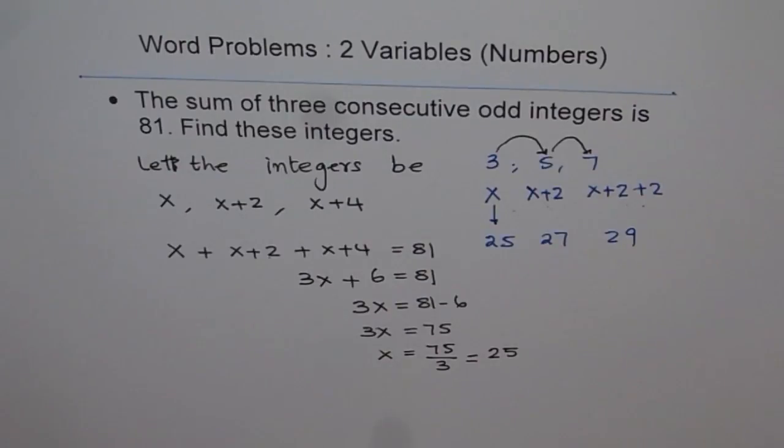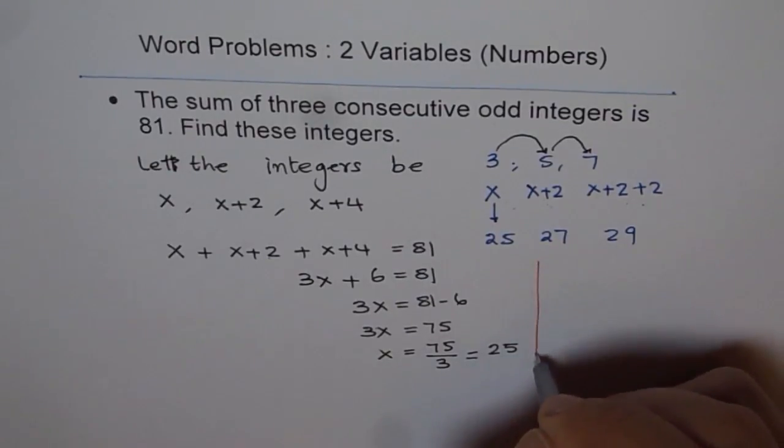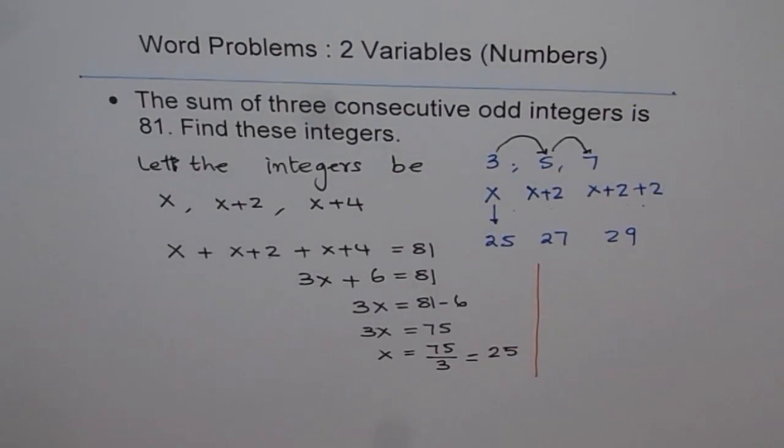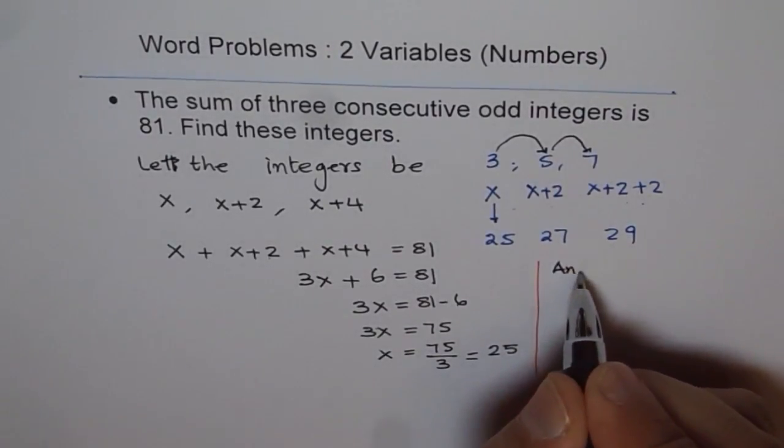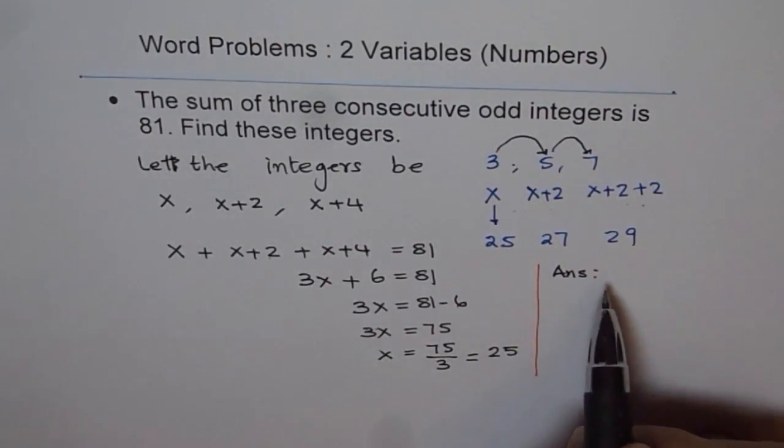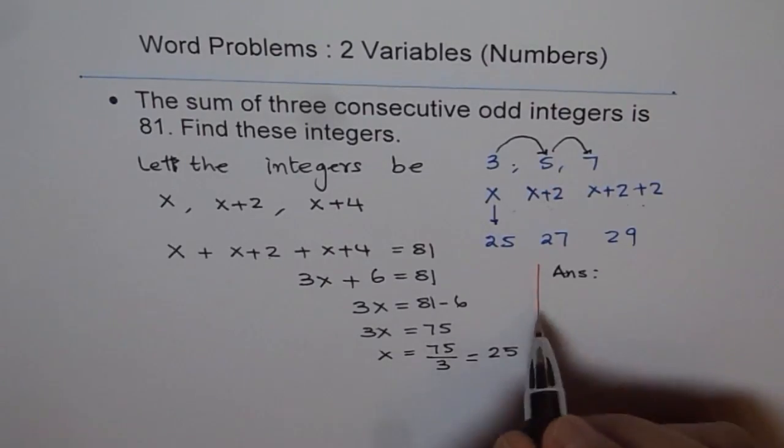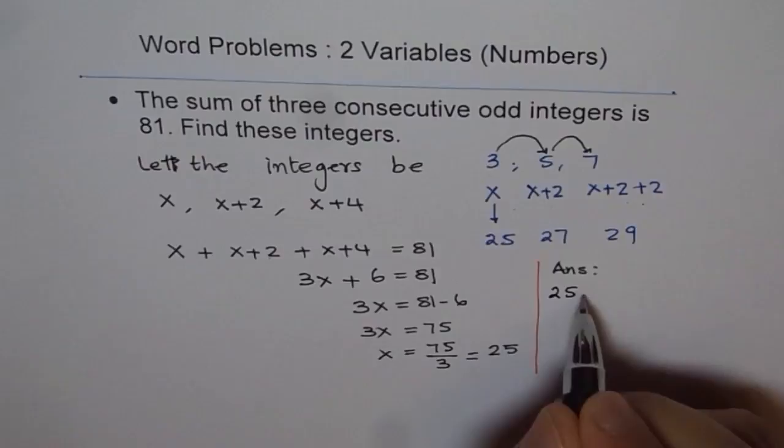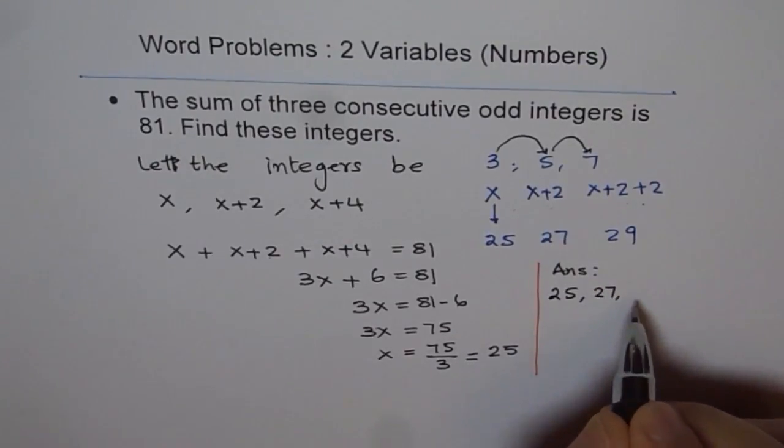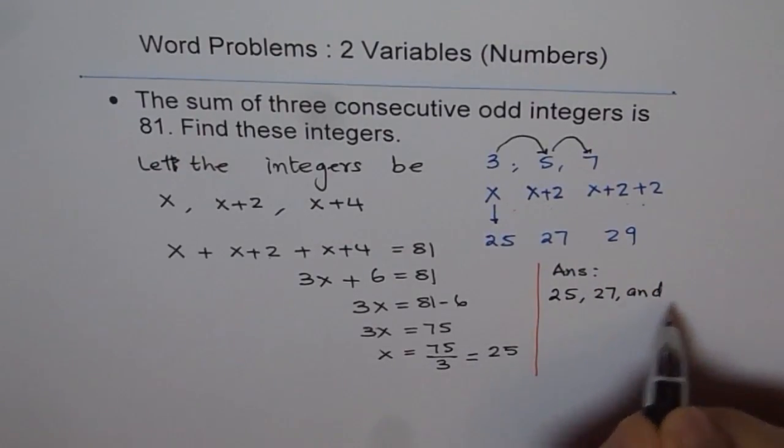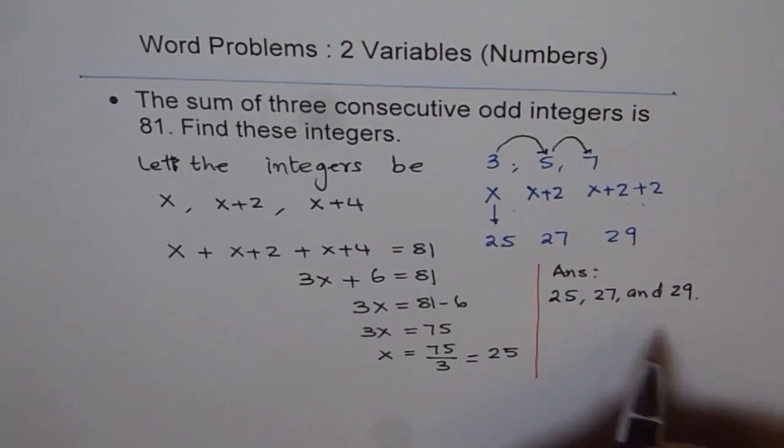Therefore, now you can write down your answer very clearly. Let me write down the answer on this side and say: Answer - the three consecutive odd integers are 25, 27, and 29. So that becomes your answer.